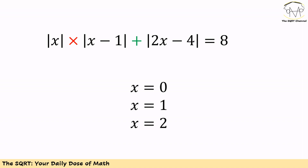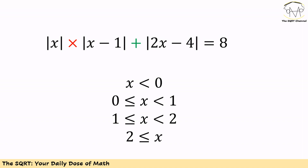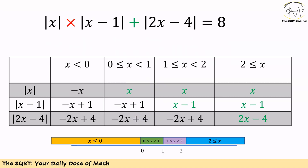Based on these root values, we divide the integer numbers into four regions: x less than 0, x between 0 and 1, x between 1 and 2, and x greater than 2. For each region we will determine the value of each absolute value expression.